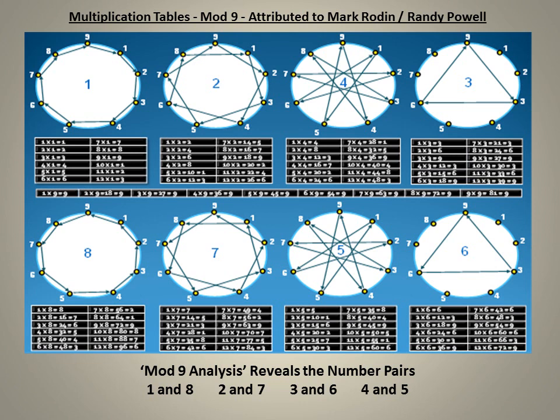For those new to modular arithmetic who are wondering what happened to the 9 and the 0: whatever modular base you work in will necessarily result back to itself or 0. In mod 9, the 9 is paired with 0. For example, 1 times 9 equals 9 (or 0, as there is no remainder). 2 times 9 equals 18 equals 9; 3 times 9 equals 27 equals 9, and so on.